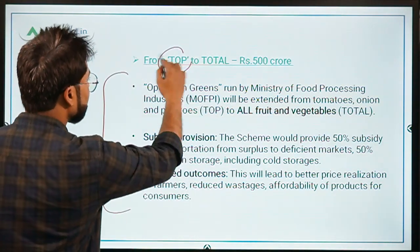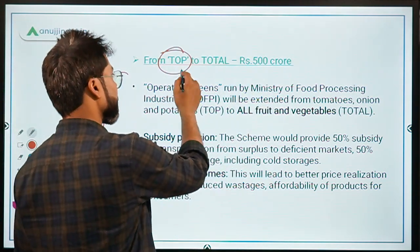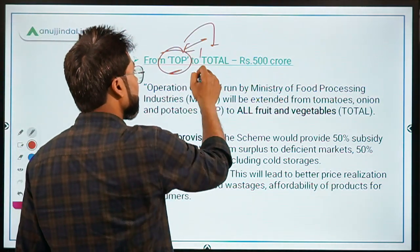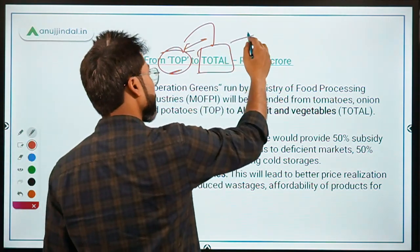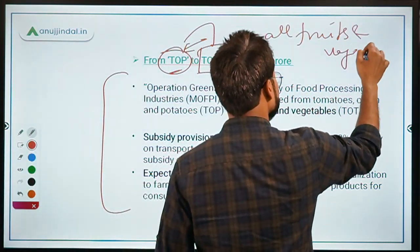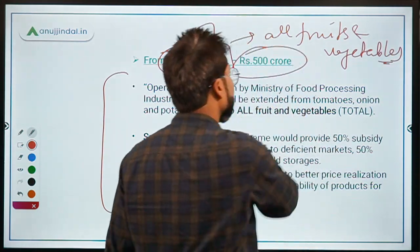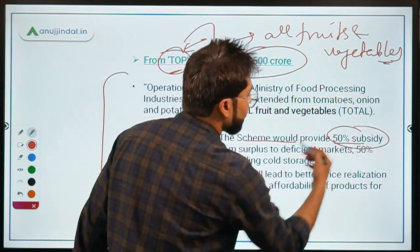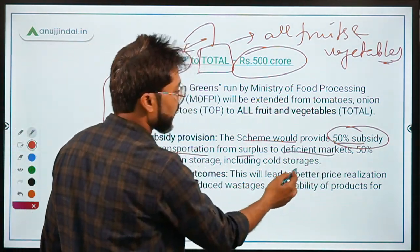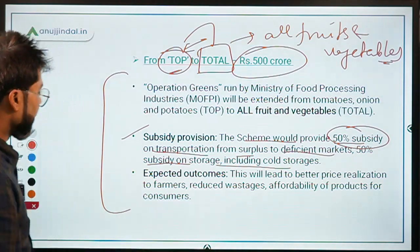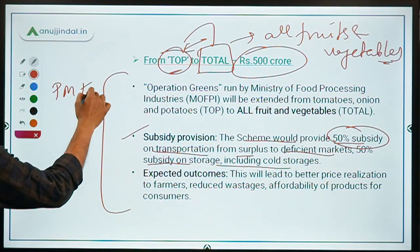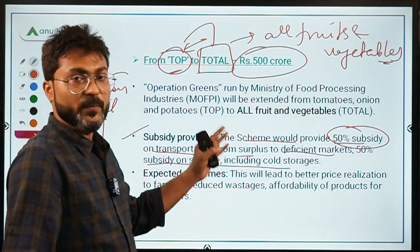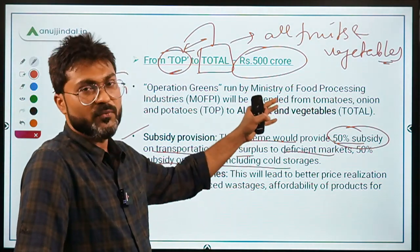The TOP (Tomato, Onion, Potato) scheme was enhanced to TOP to TOTAL, covering all fruits and vegetables. ₹500 crore was provided, offering 50% subsidy on transportation from surplus to deficient markets and 50% subsidy on cold storage. Under PM Kisan Rail also, 50% subsidy was provided under this scheme by the Ministry of Food Processing Industry.